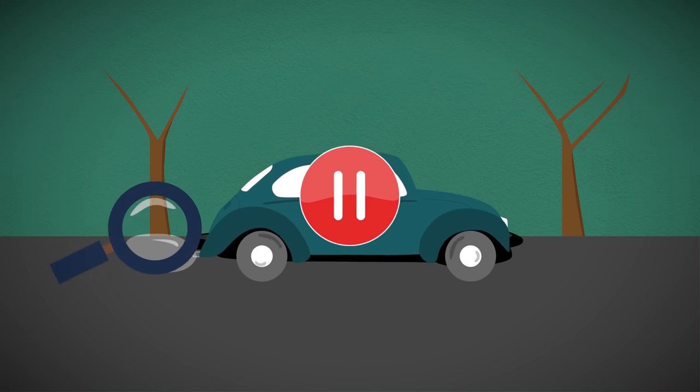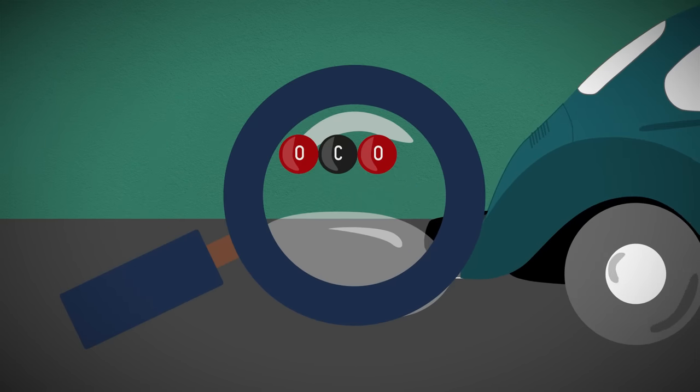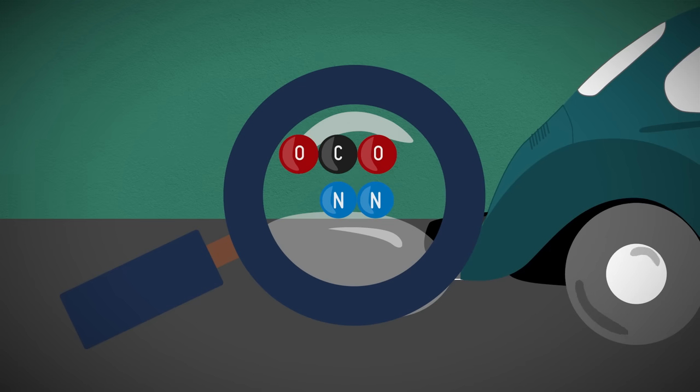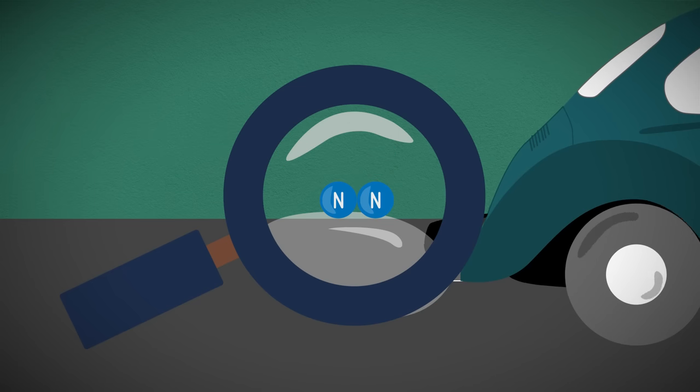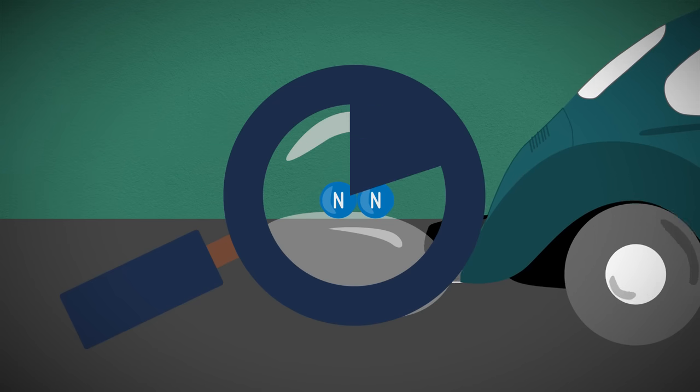You might have thought carbon dioxide but exhaust gas is mostly nitrogen. This is because the air used to burn the petrol is four-fifths nitrogen.